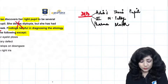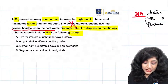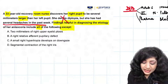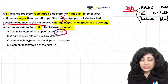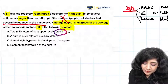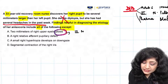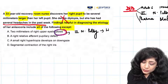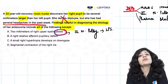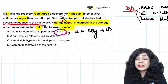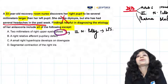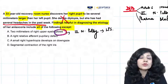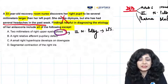Now let us see what the options are saying. Number one: 2 mm of right upper lid ptosis. Can this patient have ptosis? Definitely yes, because if the patient has a third nerve palsy, there can be paralysis of the levator palpebrae superioris muscle, which leads to ptosis. So finding ptosis will help in identifying the etiology.